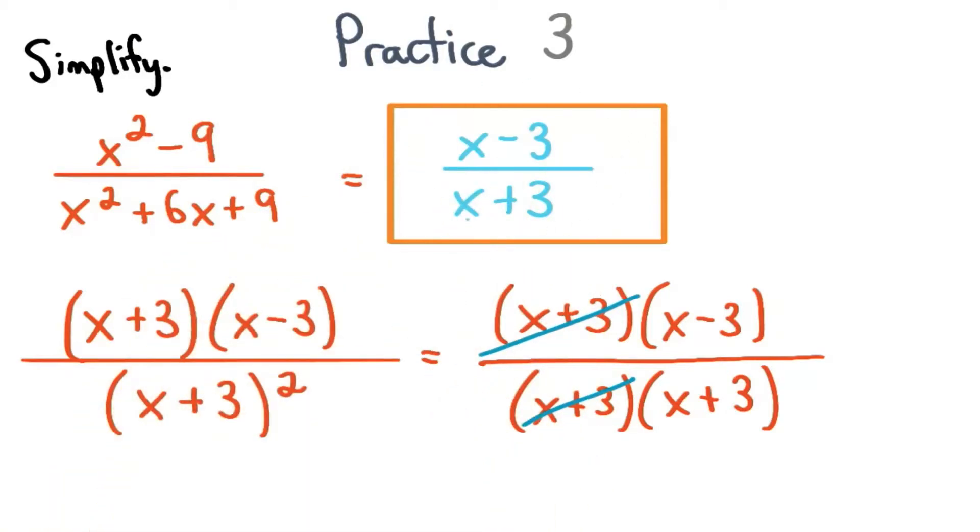Here's our answer. Great work if you got that one correct. We can factor the numerator to be x plus 3 times x minus 3, since this is the difference of two squares.